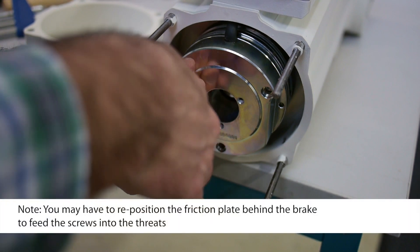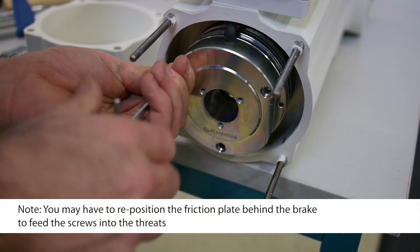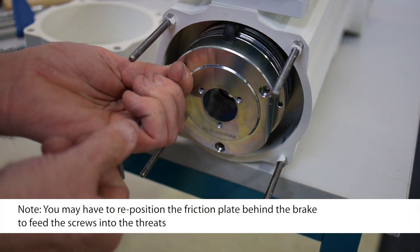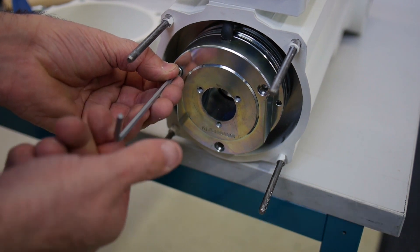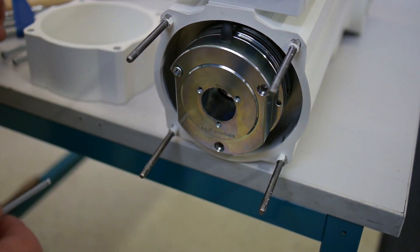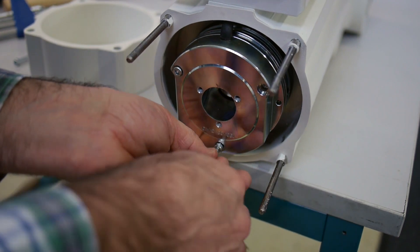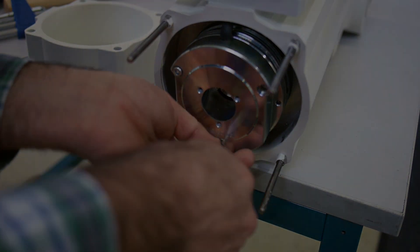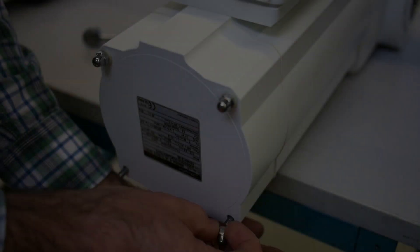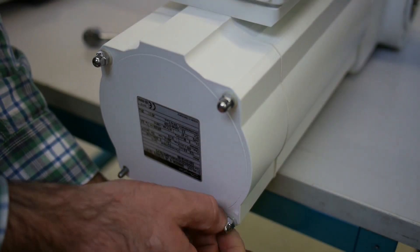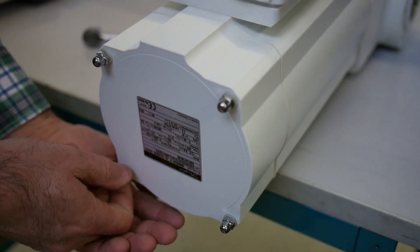Tighten the three hexagon socket screws again to fasten the brake. Close the brake cover again and fasten all four screws.